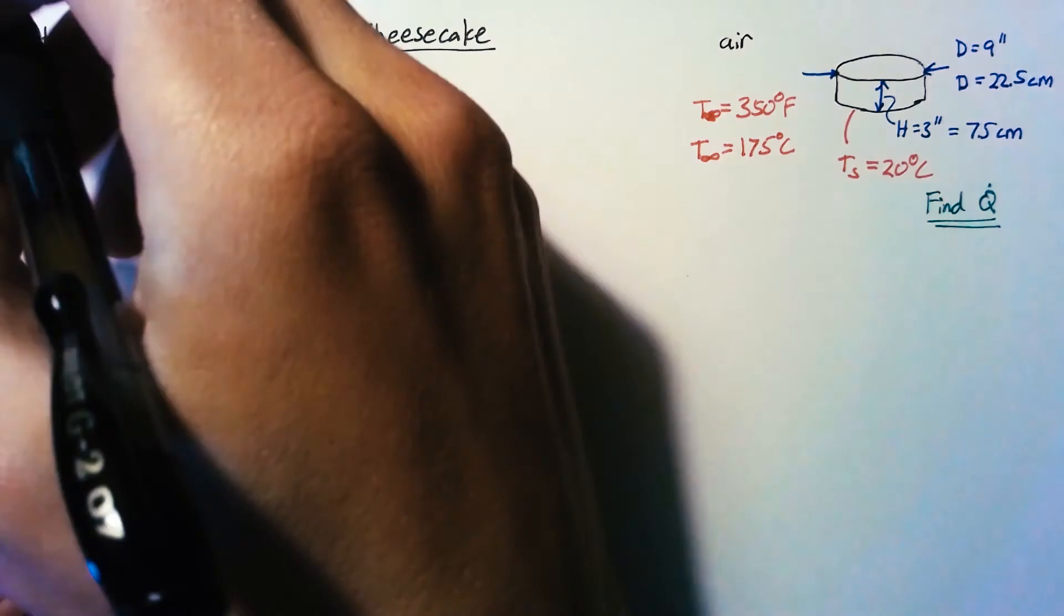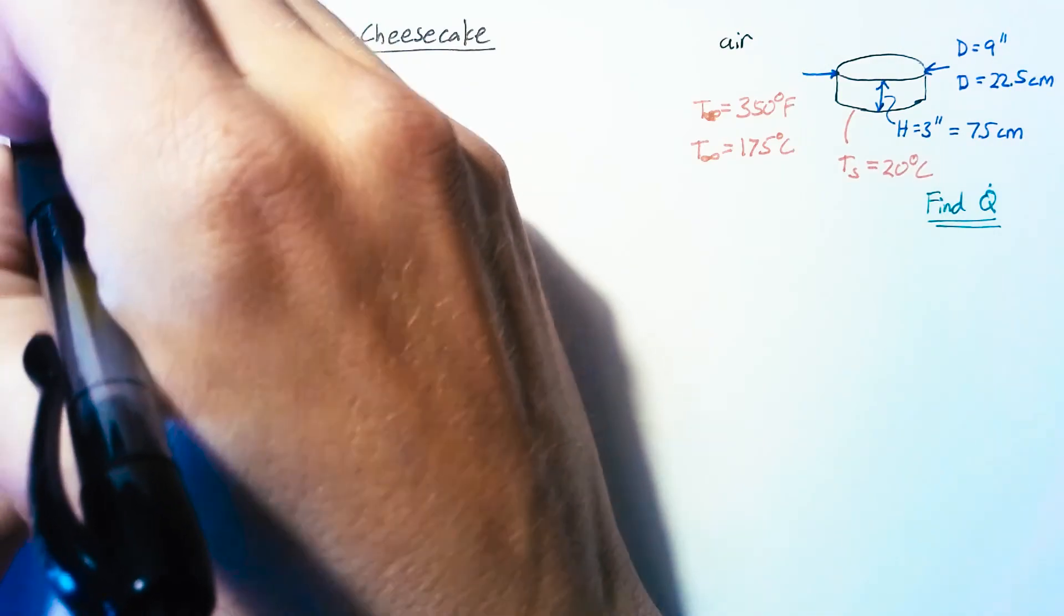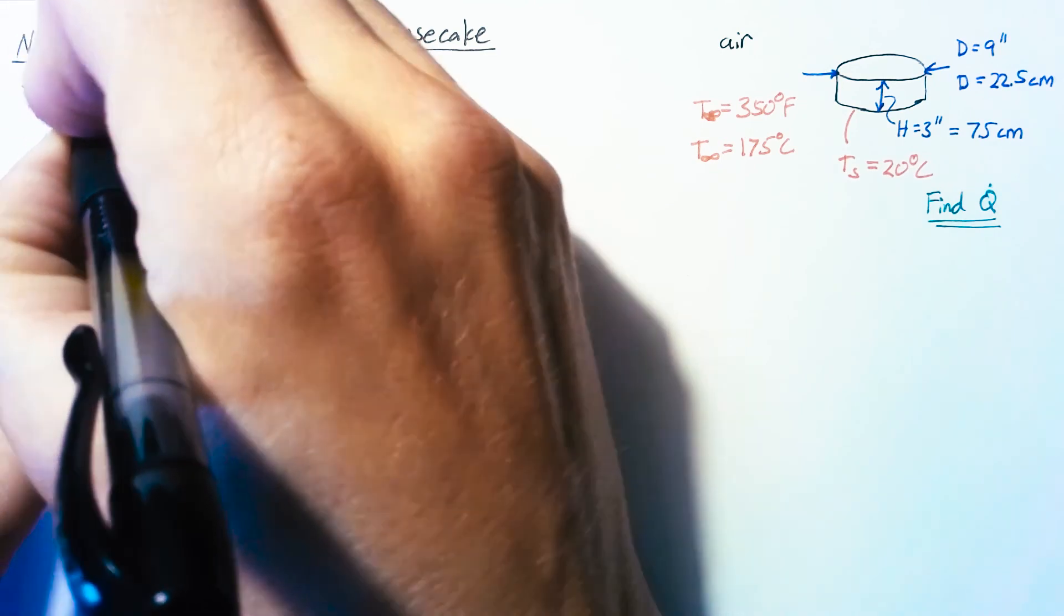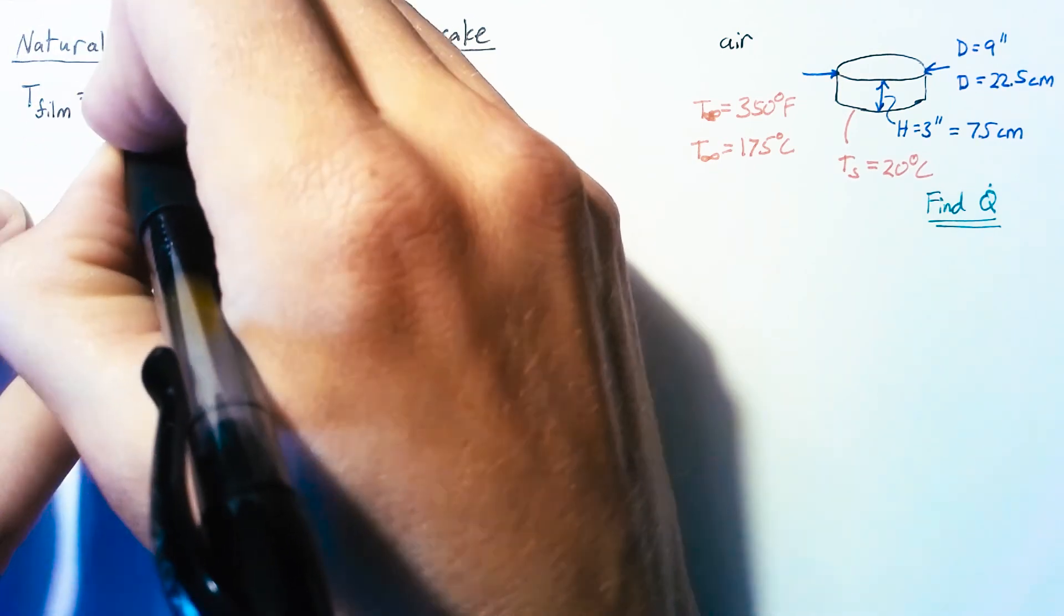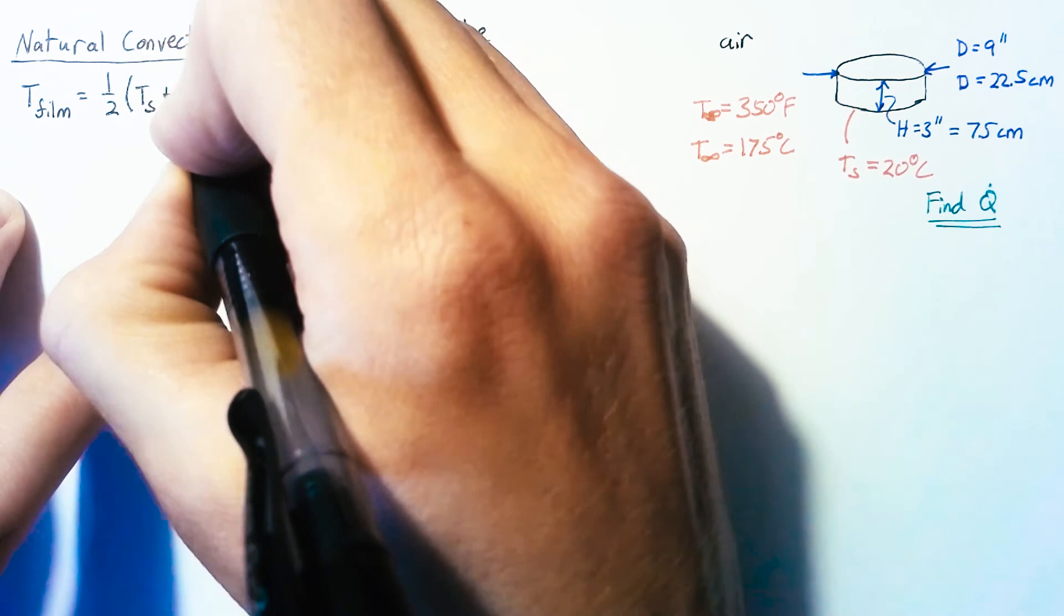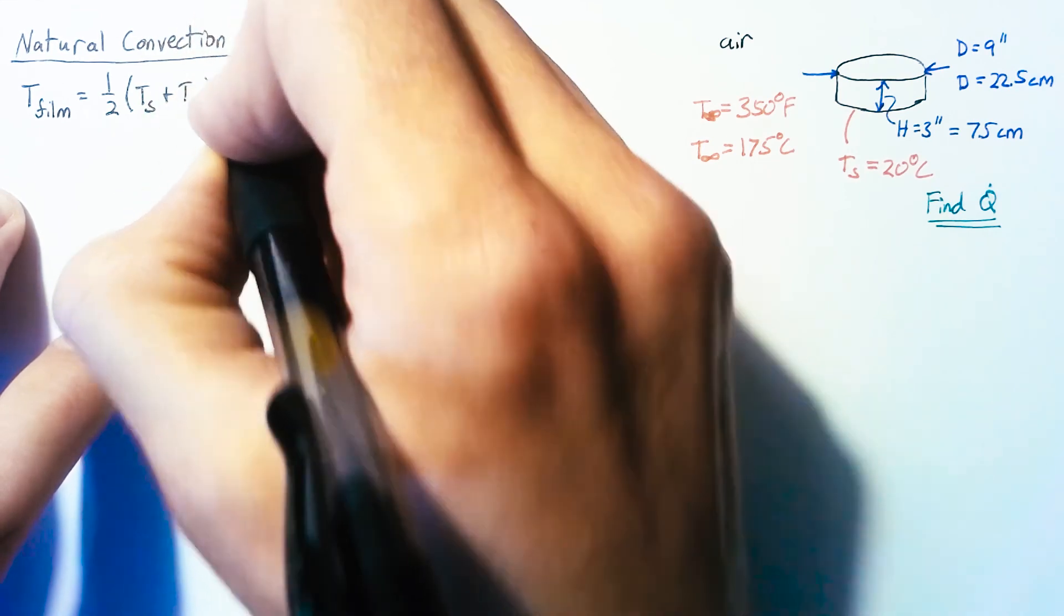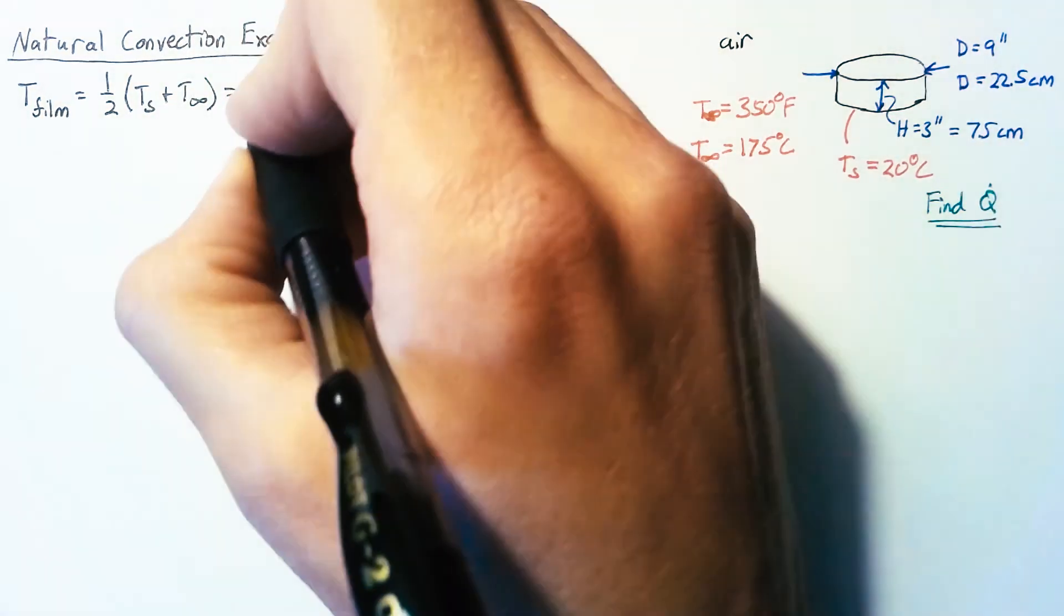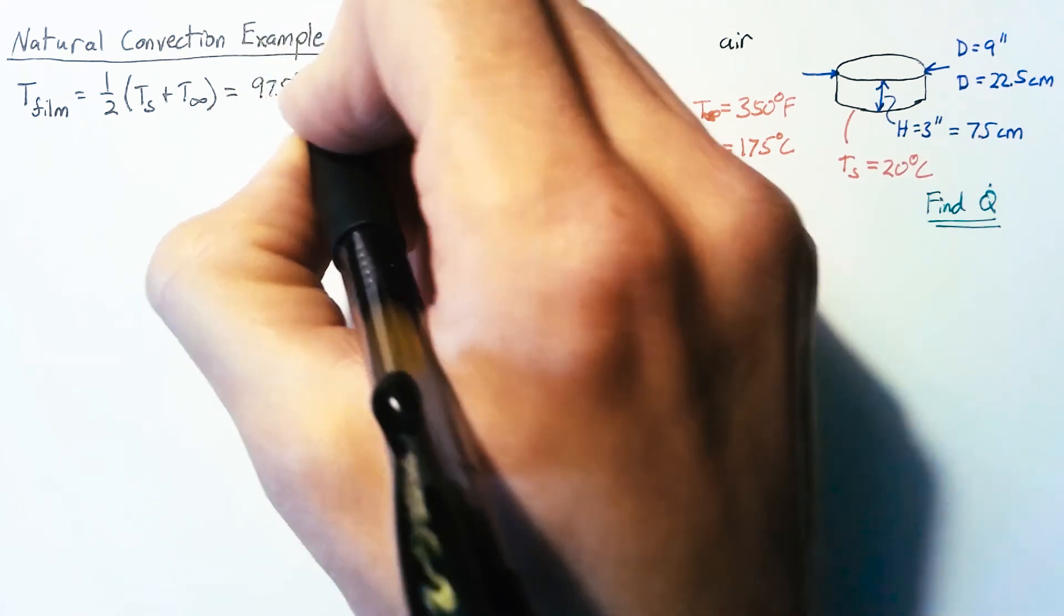To start off though we need to get our physical properties and we get those by looking at the film temperature which is just going to be the average of the surface and air temperatures and that ends up being 97.5 degrees Celsius.